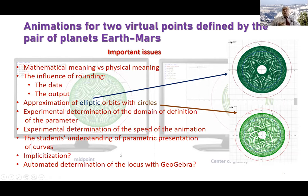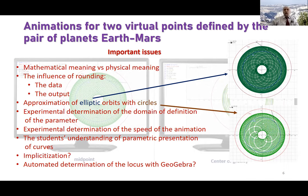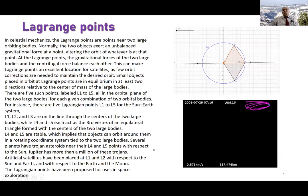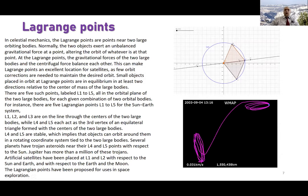We also need to appeal to students' understanding of parametric presentation of curves, and sometimes we ask the question of implicitization, which is very hard. This is the determination of a locus with GeoGebra — GeoGebra has automated tools to find loci, but here it cannot work because the data is too heavy and doesn't fit the programming in GeoGebra.